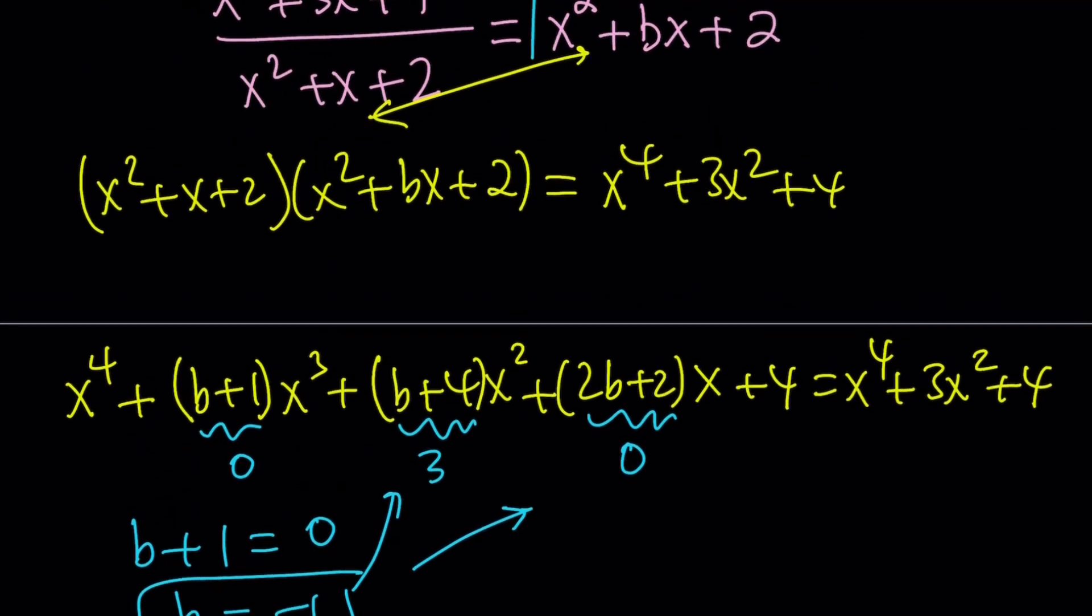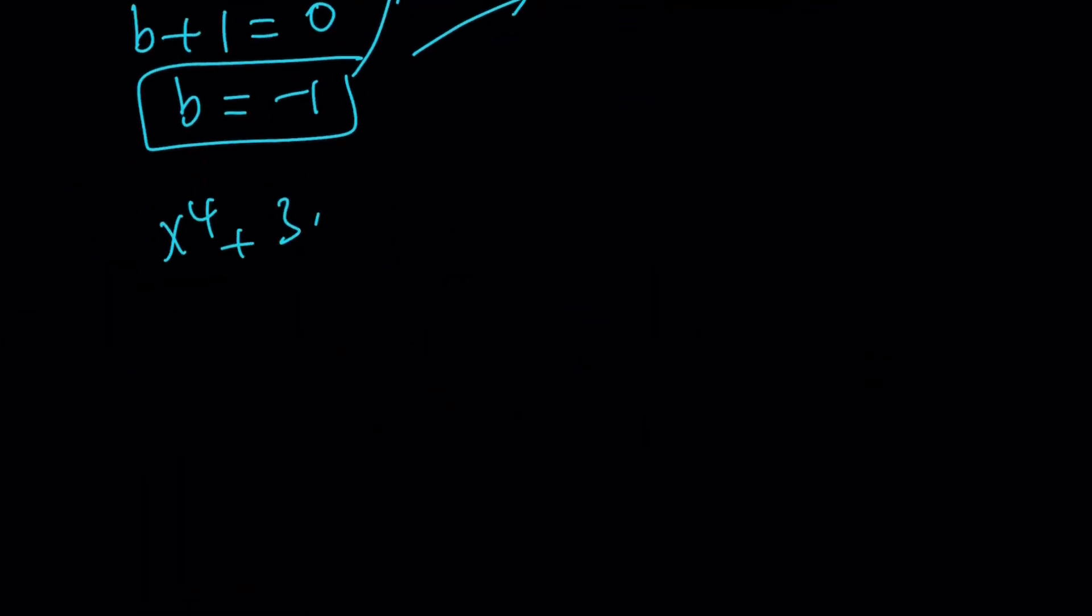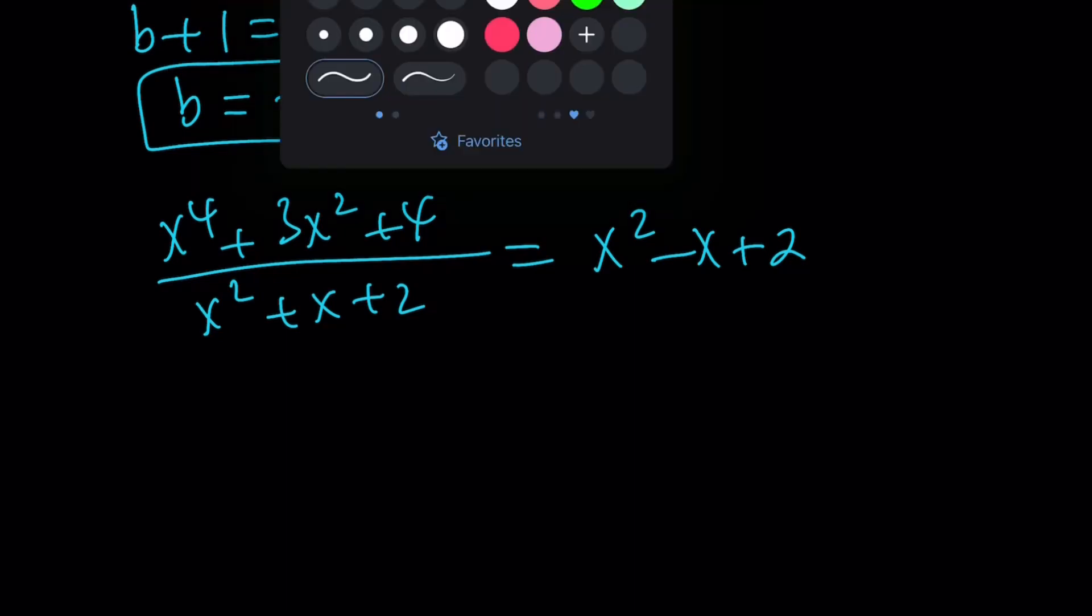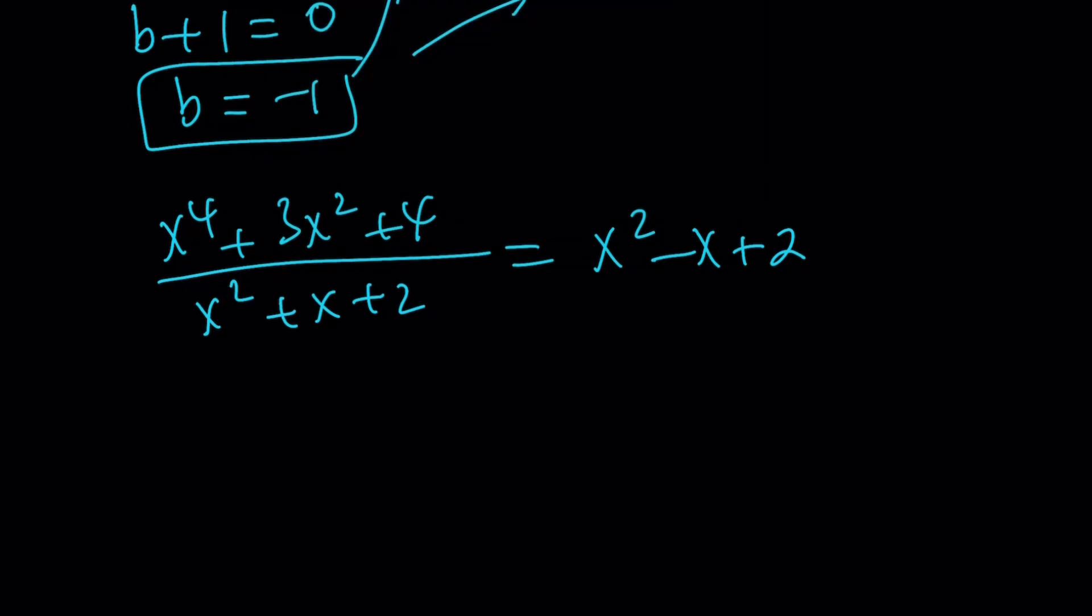So b equals negative 1 gives us the answer, right? Because this is what we were looking for. So when you divide x to the 4th plus 3x squared plus 4 by x squared plus x plus 2, that gives you x squared minus x plus 2, because b is negative 1, the coefficient of x. Make sense? Hopefully it does. Let's go ahead and talk about the first method now, because we did the second method first.